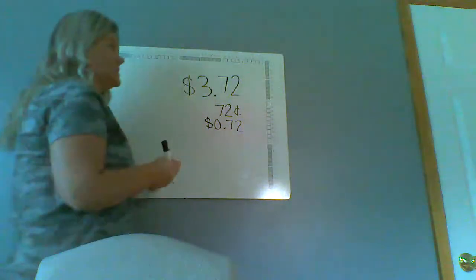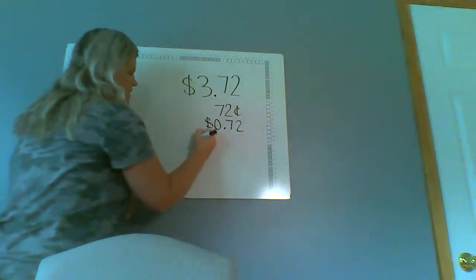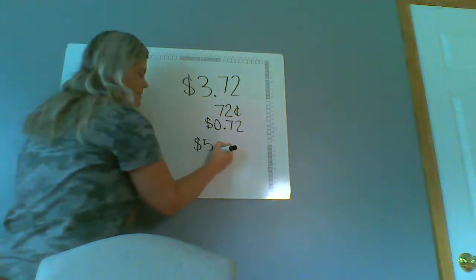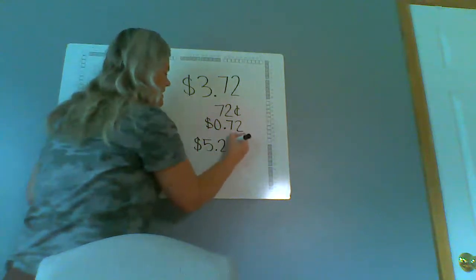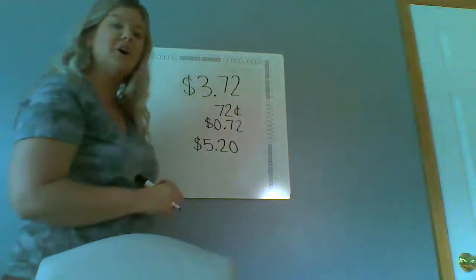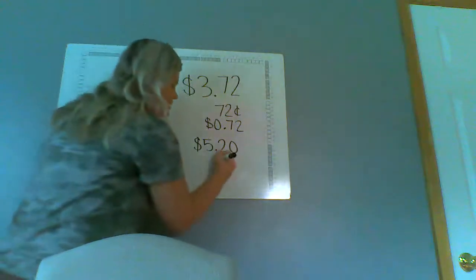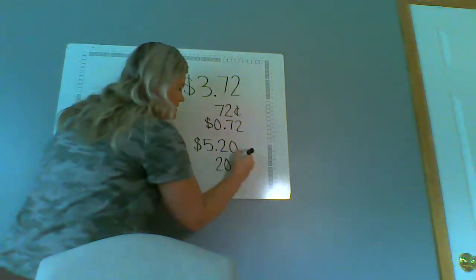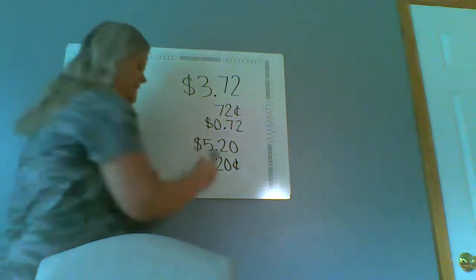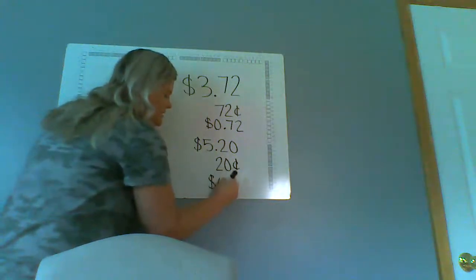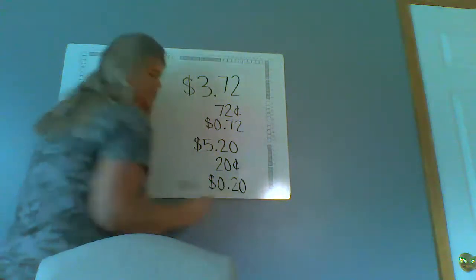Let's do another one — let's do $5.20. Start with our dollar sign, then $5, then my decimal, and then 20. Now how would I show it if I only had $0.20 — if I spent that $5 and only had 20 cents left? You can write $0.20 using a zero before the decimal, or you can write it with a dollar sign, zero, decimal, 20. Good job.